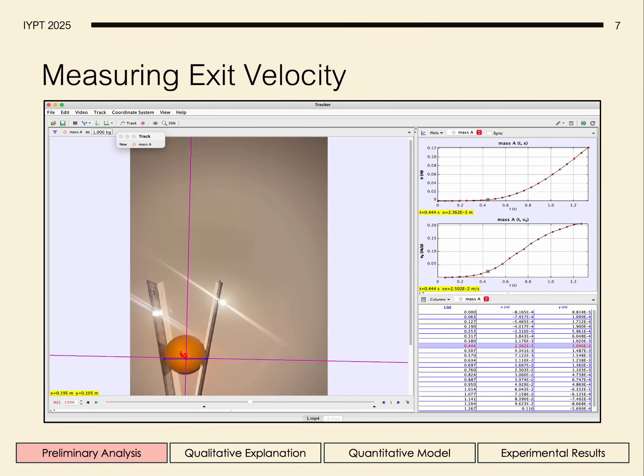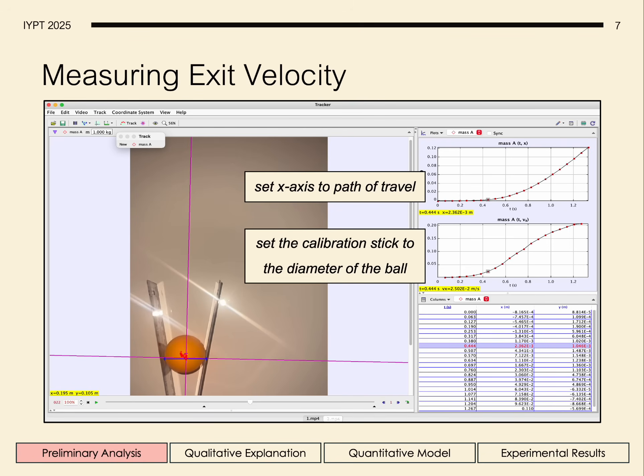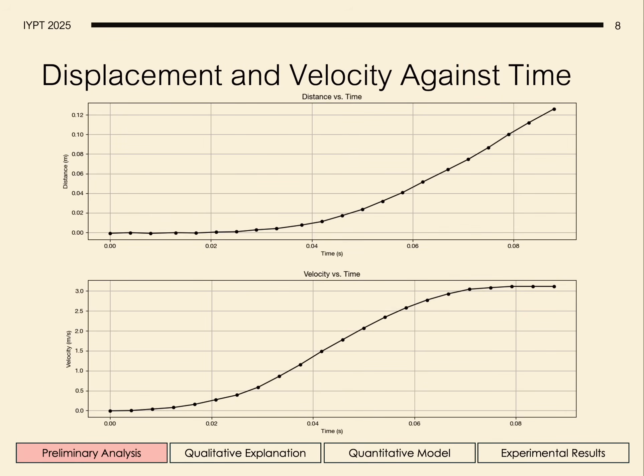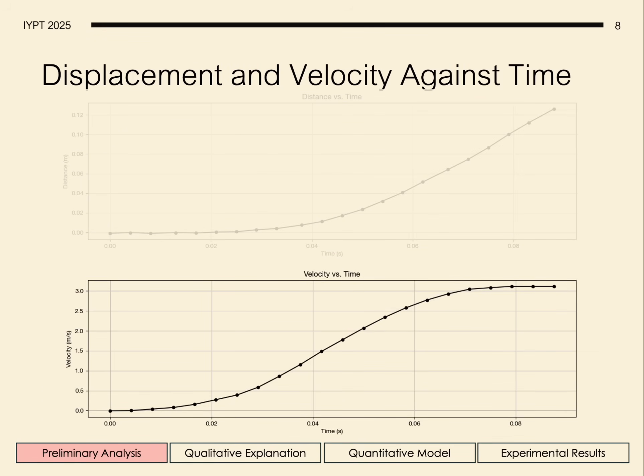To accurately measure the exit velocity, we used tracker. By setting the x-axis to the path of travel, the calibration stick to the diameter of the ball, and manually tracking the ball center at each frame, which can be seen here, we can use the velocity time graph to find the exit velocity.